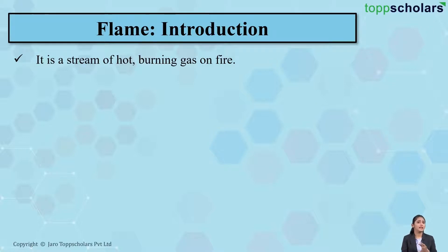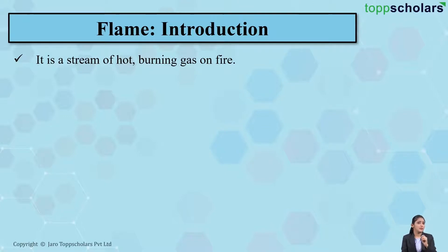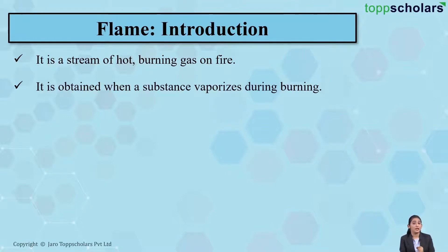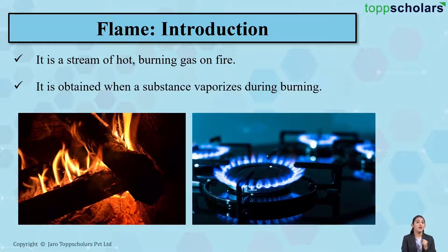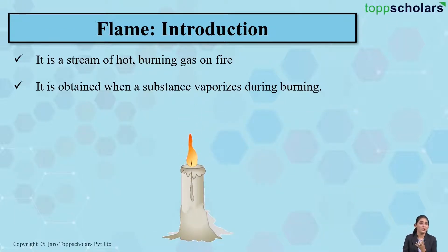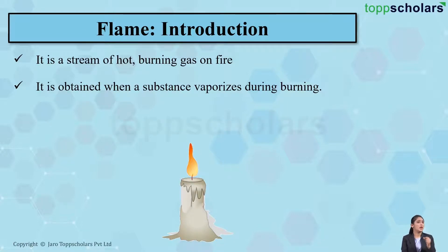There are some substances which on burning give you flame, but there are some which do not. Substances which actually vaporize during burning are the ones which give flame. A flame is obtained only when a substance vaporizes during burning. For example, a candle when it burns it vaporizes, and so a candle on burning produces flame.